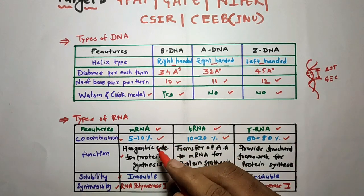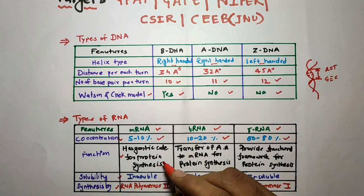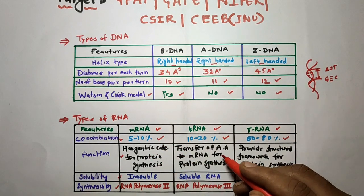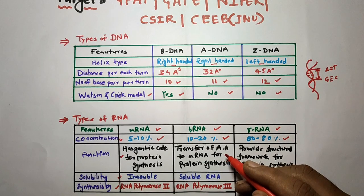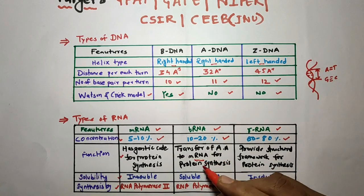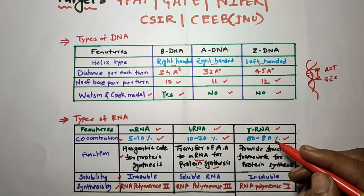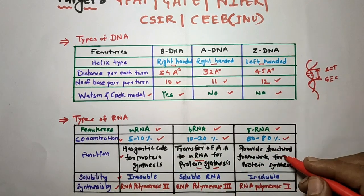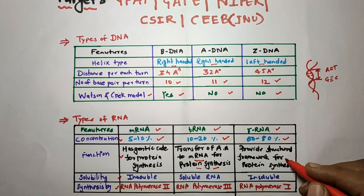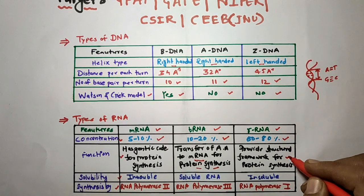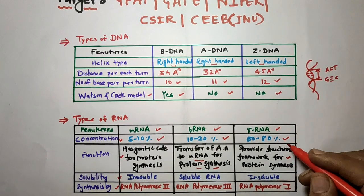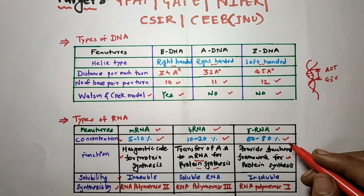Now we will see the function of different types of RNA. mRNA carries the genetic code for protein synthesis. tRNA functions to transfer amino acids to mRNA for protein synthesis. The function of rRNA is to provide the structural framework for protein synthesis.